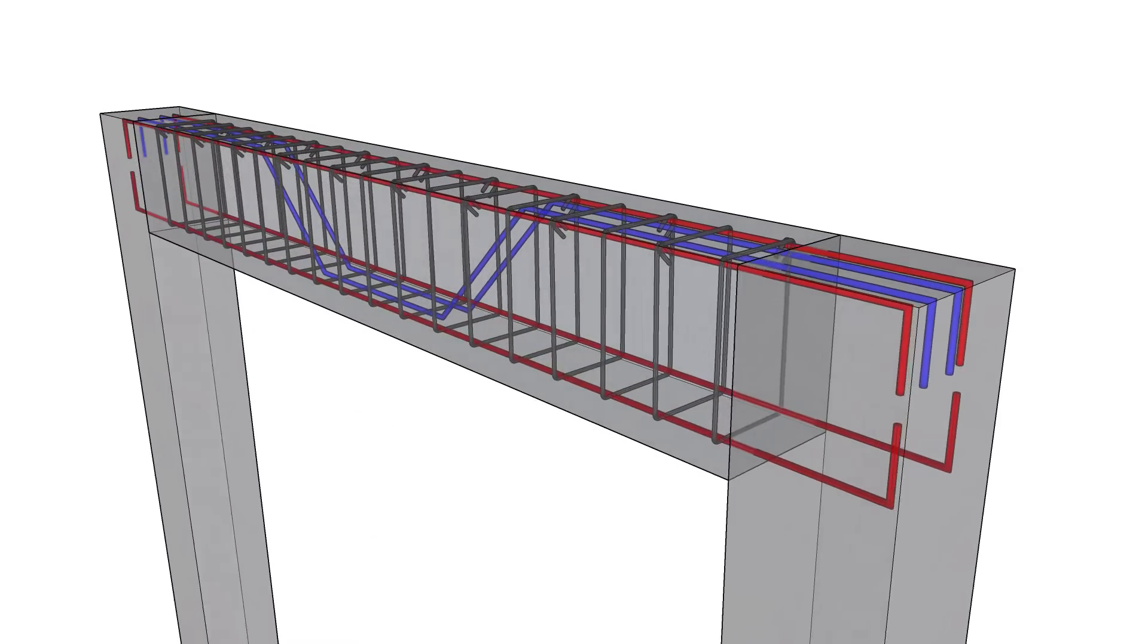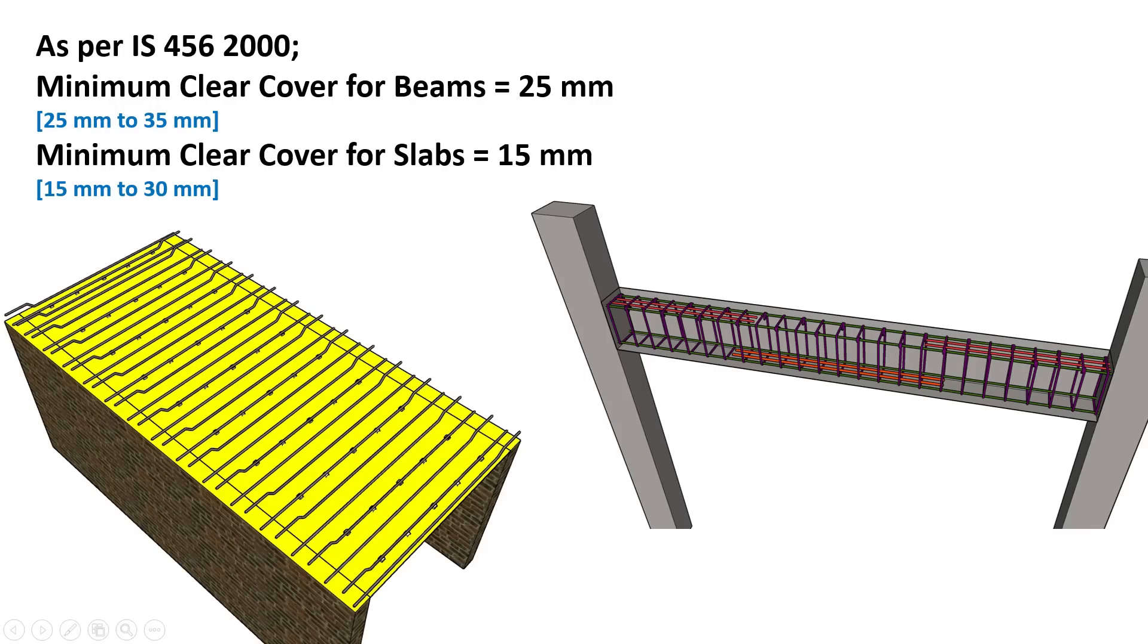As per IS 456-2000, the minimum clear cover for beams should be 25 mm, varying from 25 mm to 35 mm based on environmental conditions. For slabs, the minimum clear cover should be 15 mm, ranging from 15 mm to 30 mm based on environmental factors.